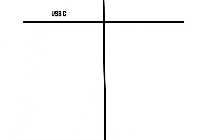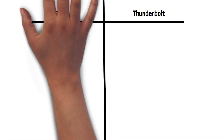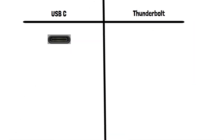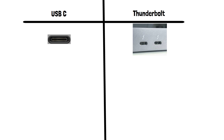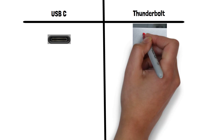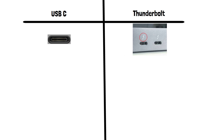Let's start with the actual connector. USB-C is a reversible connector that is smaller and more versatile than previous USB connectors. It's designed to be symmetrical so it can be plugged in either way. Thunderbolt also uses the exact same USB-C connector, but not all USB-C ports support Thunderbolt. The key to telling which ones do is looking for the Thunderbolt symbol on the cable or socket.